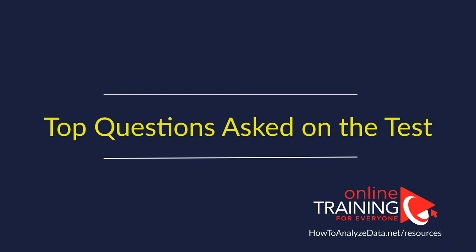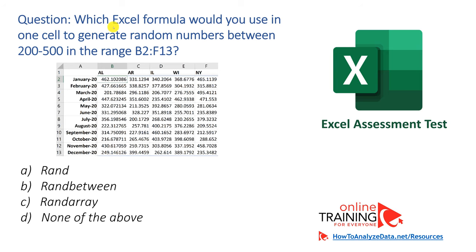Now let's look at the top questions asked as part of Excel assessment tests. Which Excel formula would you use in one cell to generate random numbers between 200 and 500 in the range between B2 and F13? The sample shows random values with decimal points populating that range. The four choices are RAND, RANDBETWEEN, RANDARRAY — all three are valid Excel functions — and choice D, none of the above.